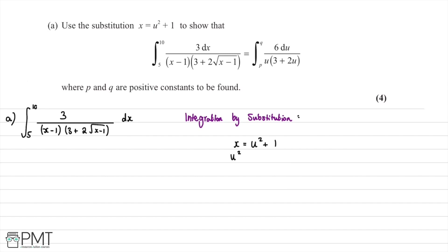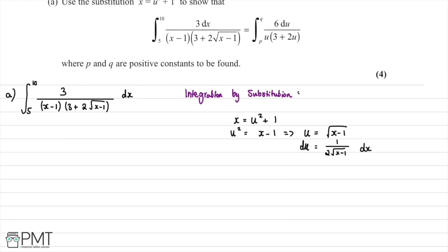We rearrange to get u squared equals x minus 1, so u equals the square root of x minus 1. This is useful because we can see the square root of x minus 1 in our integrand. Differentiating gives du equal to 1 divided by 2 lots of the square root of x minus 1, dx. Rearranging, dx equals 2 lots of the square root of x minus 1 multiplied by du.